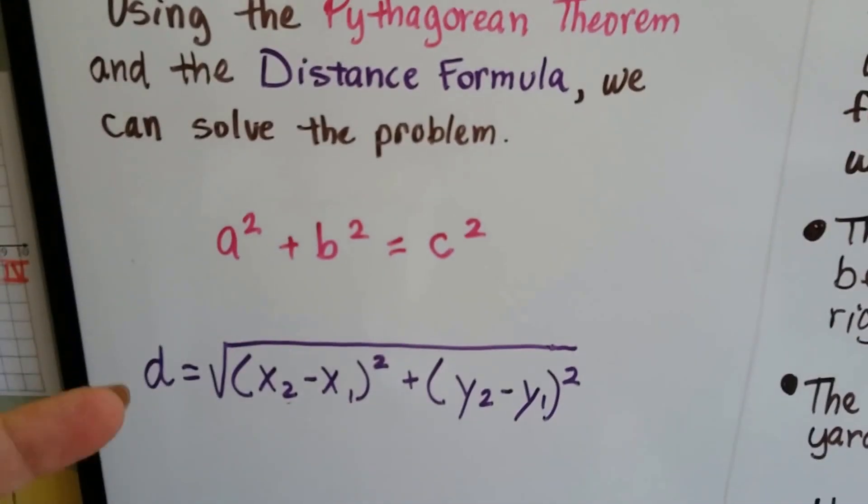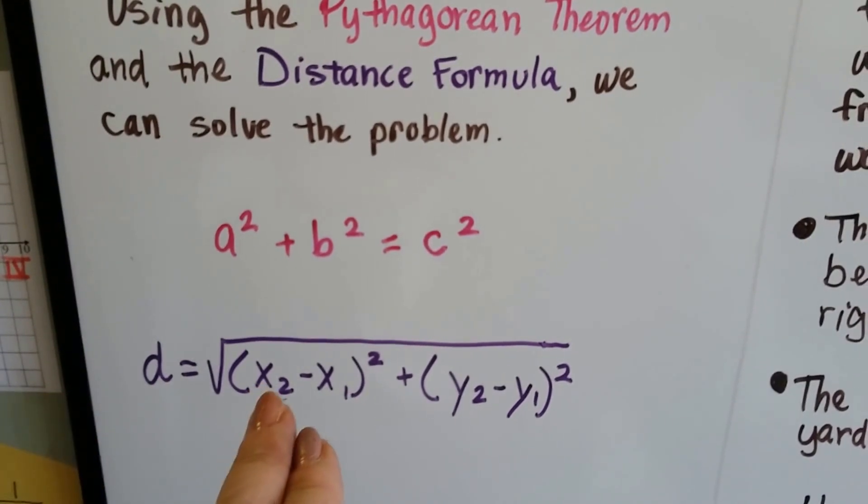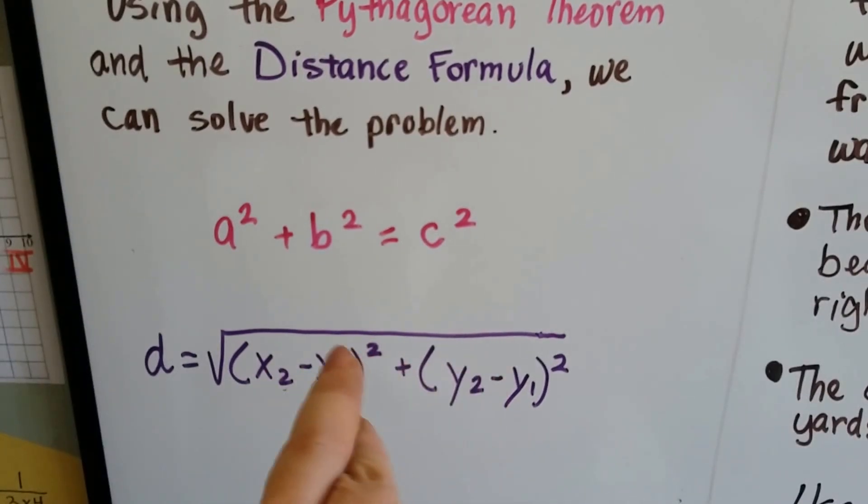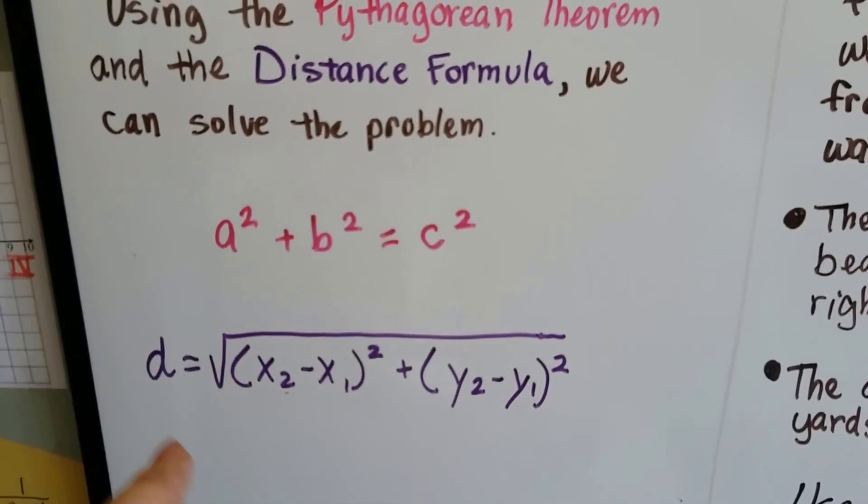So remember, this is the Pythagorean theorem, and this is the distance formula, where the x's are grouped together and the y values are grouped together. We add them, and we can see they're squared and they're inside of a radical symbol.